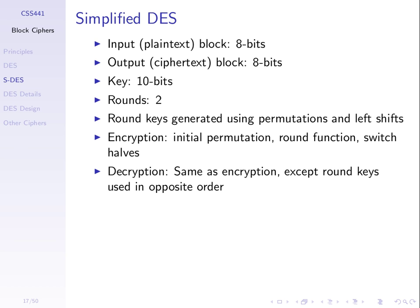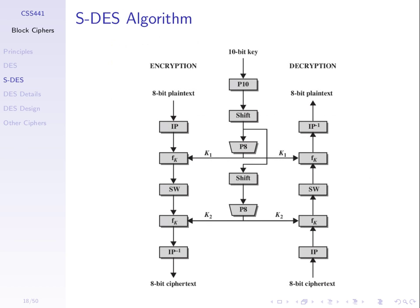The key generation steps use operations P10, left-shift, and P8. The user chooses a 10-bit key. Applying these steps produces two sub-keys k1 and k2 used in the two rounds of encryption. Real DES similarly generates 16 sub-keys — one per round — from a single original key. For encryption we take 8 bits of plain text, do an initial permutation (IP), apply round function f(K) with k1, perform a swap, apply f(K) again with k2, and finish with the inverse initial permutation to get ciphertext.